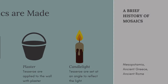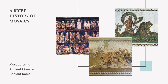The earliest examples of mosaic art come from Mesopotamia and date from the 3rd millennium BCE. They gained popularity and were used extensively throughout the Roman Empire. Mosaics reached a peak in the Late Antique and Medieval periods. The best preserved, or in some cases restored, examples can be found in Rome and Ravenna, Italy. This is where we are traveling today to explore three beautiful buildings.